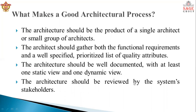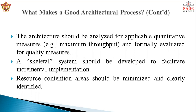What makes a good architectural process? The architecture should be the product of a single architect or a small group of architects. The architect should gather both functional requirements and a well-specified list of quality attributes. The architecture should be well documented with at least one static view and one dynamic view, and the architecture should be reviewed by the system's stakeholders. The architecture should be analyzed for applicable quantitative measurement and formally evaluated for quality measures.